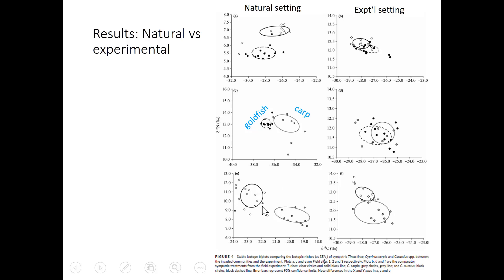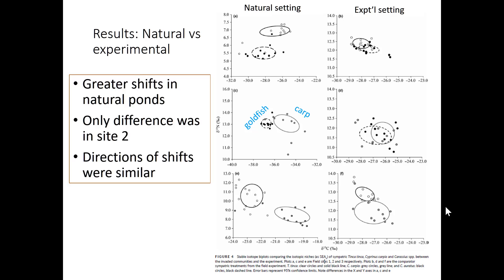In site two, the niche of goldfish and carp are the only pair with a statistically significant differentiation between the two niches in the pond, but in the experiment there's pretty good overlap. Site three shows apparent divisions between niches in nature, but statistically the ellipses still overlap — they're not significantly different. The authors argue that the direction of niche shifts is similar, with one niche shifting up from another, but that's debatable.